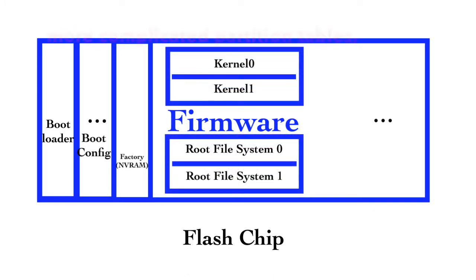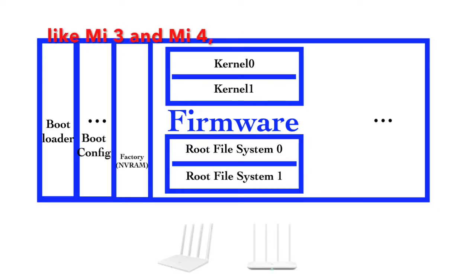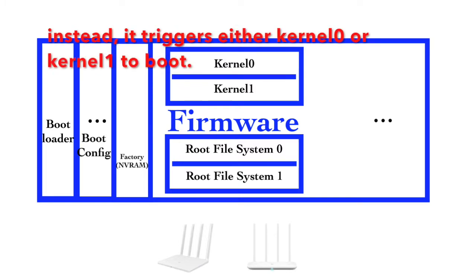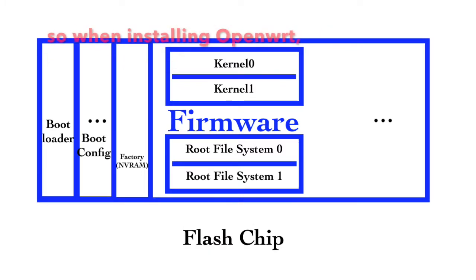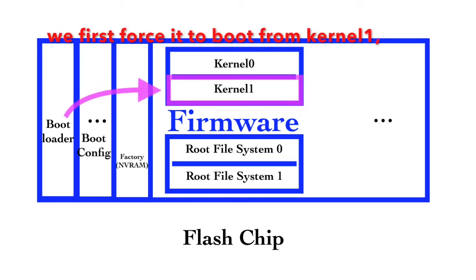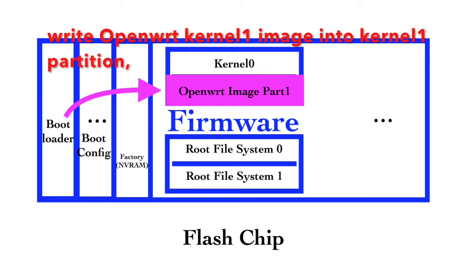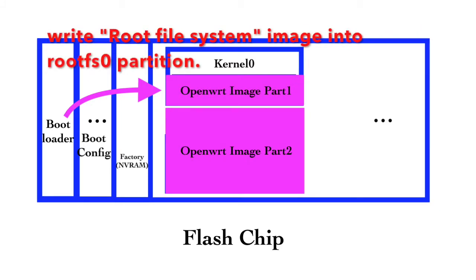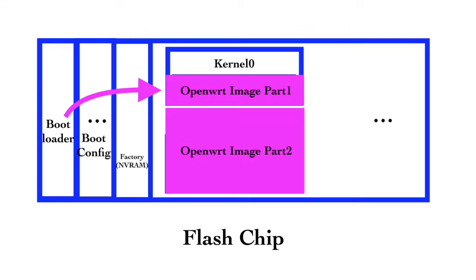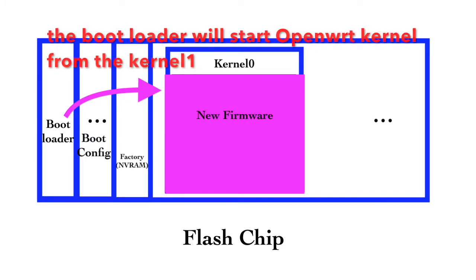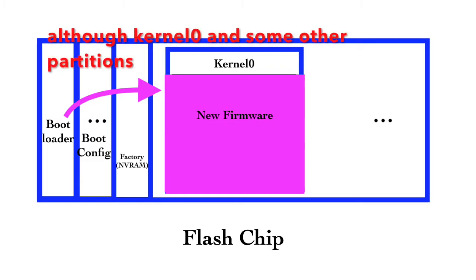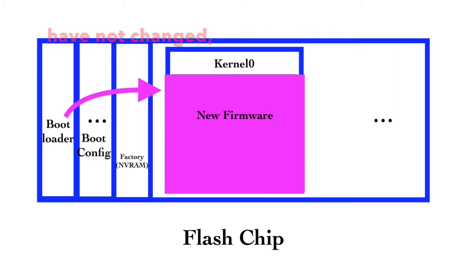But some later devices have a more complicated partition table, like Mi3 and Mi4. The firmware partition has two kernels. The bootloader does not directly trigger booting from the firmware partition. Instead, the bootloader triggers either kernel 0 or kernel 1 to boot. So when installing OpenWRT, we first force it to boot from kernel 1 by setting the configuration. Then we individually write the OpenWRT kernel into the kernel 1 partition, and write the OpenWRT root file system into the rootfs0 partition. The bootloader will start the OpenWRT kernel from the kernel 1 partition, then mount the root file system. Although kernel 0 and some other partitions have not changed, we will no longer boot from kernel 0, so it doesn't matter.